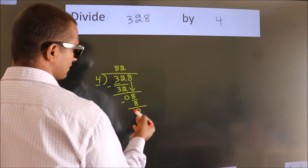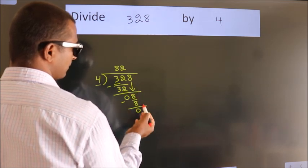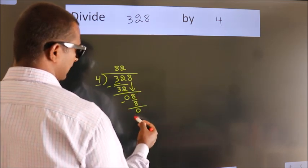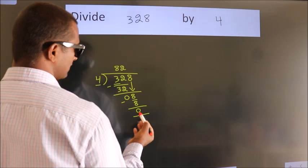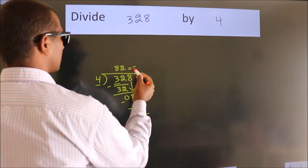After this, no more numbers to bring it down. And we got remainder 0. So this is our quotient.